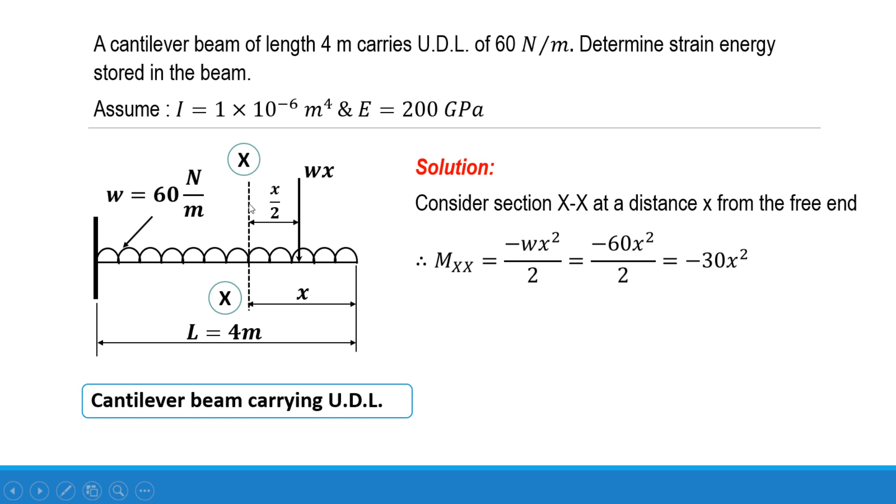We'll consider any section XX at a distance of x from the free end of the cantilever. As it is a uniformly distributed load, w × x will be the total load that will be acting, converted into point load and acting at the center of this x meter length, that is x/2. The arrow of this w × x load goes in the clockwise direction towards the section XX and perpendicular distance is x/2.